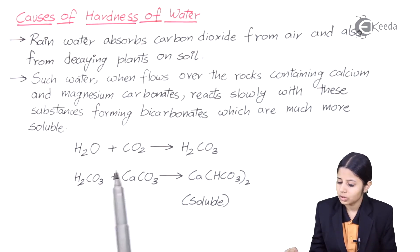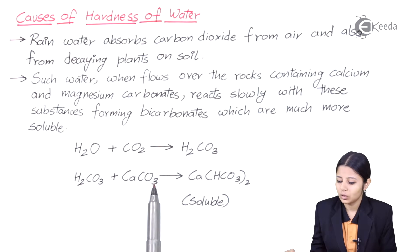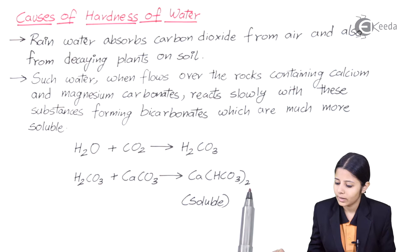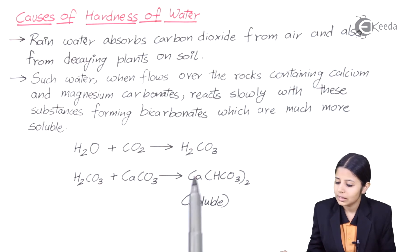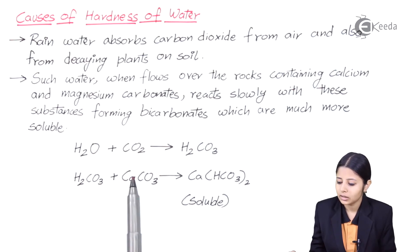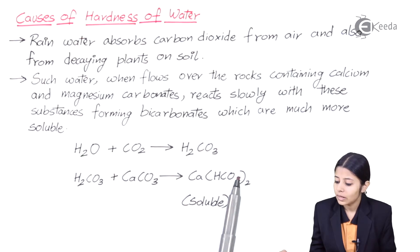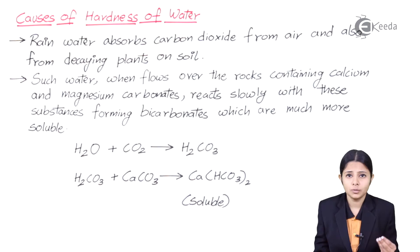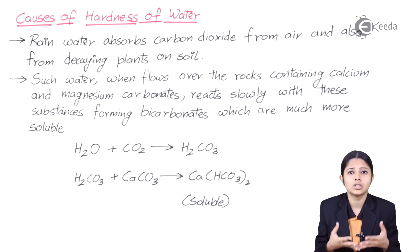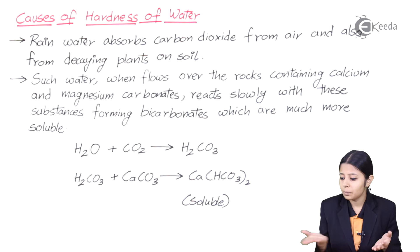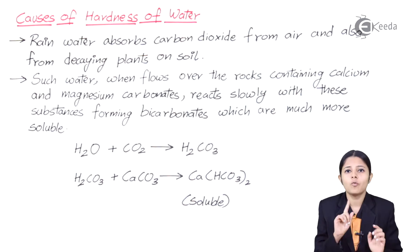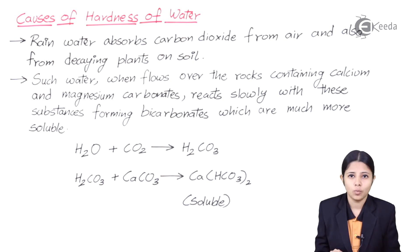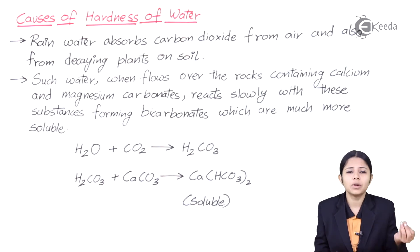When H2CO3 mixes with CaCO3, we get Ca(HCO3)2. There are two reactants forming one product, and it is very important to note that this product is soluble. When the product is soluble, it mixes with water to form a homogeneous mixture, which means it becomes a permanent impurity implanted in the water that cannot be removed by simple filtration.